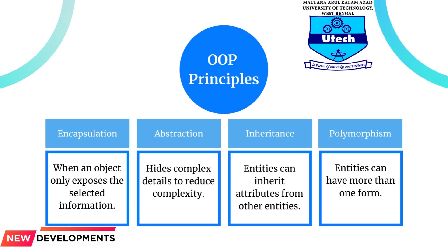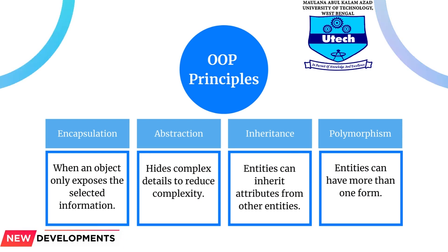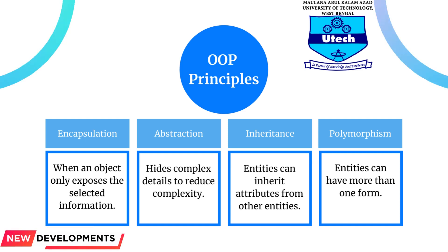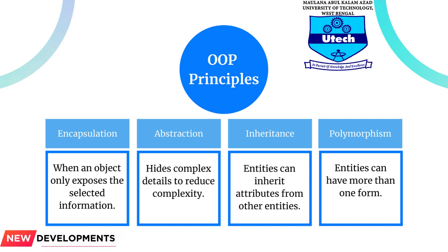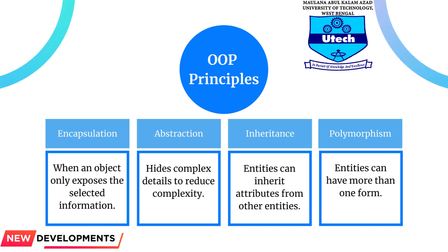What are the main principles of object-oriented programming? OOP is based on the following principles. Encapsulation: this principle states that all important information is contained inside an object and only select information is exposed. The implementation and state of each object are privately held inside a defined class. Other objects do not have access to this class or the authority to make changes.